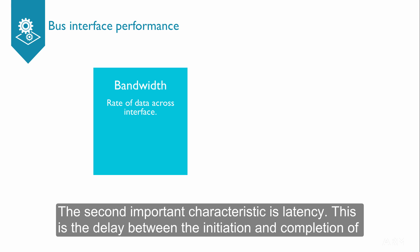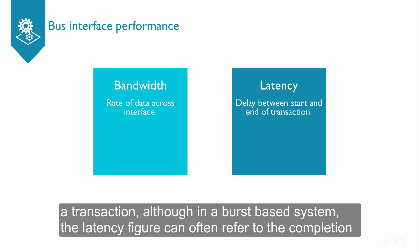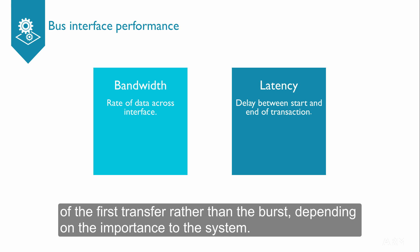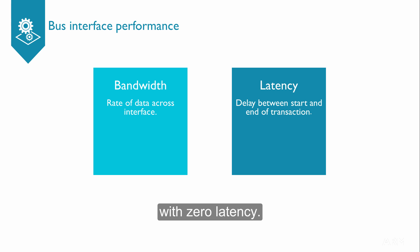The second important characteristic is latency. This is the delay between the initiation and the completion of a transaction. Although in a burst-based system, the latency figure can often refer to the completion of the first transfer rather than the burst, depending on the importance to the system. The efficiency of your interface will depend on the extent to which it achieves the maximum bandwidth with zero latency.